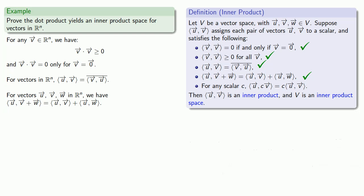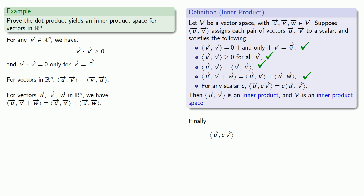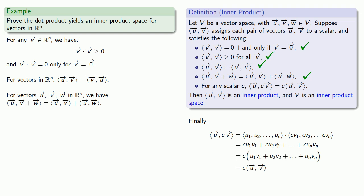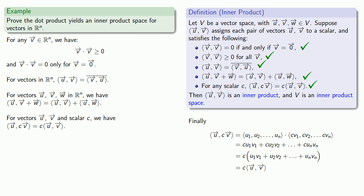Finally, we check the last requirement: that the inner product of u with a scalar multiple of the second vector is the scalar multiple of the inner product of u and v. Setting down the starting and ending points, the dot product of u with cv is c·u₁v₁ + c·u₂v₂ and so on. Meanwhile, c times the inner product of u and v is c times (u₁v₁ + u₂v₂ + …). Expanding shows the two are the same. So the dot product satisfies all of the requirements for being an inner product, and that means our vectors in Rⁿ with the dot product form an inner product space.